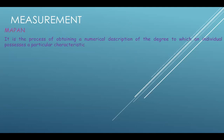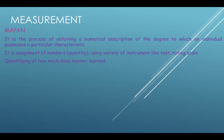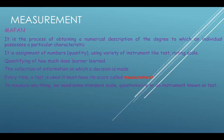Measurement is the process of obtaining a numerical description of the degree to which an individual possesses a particular characteristic. It is the assignment of numbers using a variety of instruments like tests, rating scales, and so on — quantifying how much the learner learns. It is the collection of information on which decisions are made. Every time a test is used, it must have its score called the measurement. To measure anything, we need some standard scales, questionnaires, or an instrument known as a test.